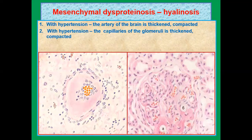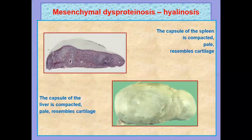With hypertension, the artery of the brain becomes thickened and compacted. With hypertension, the capillaries of the glomerulus also become thickened and compacted. The capsule of the spleen is compacted and pale, resembling cartilage.